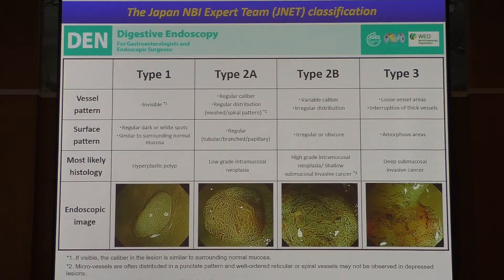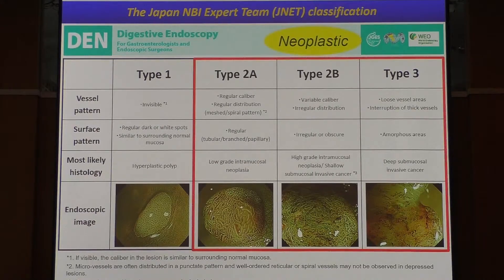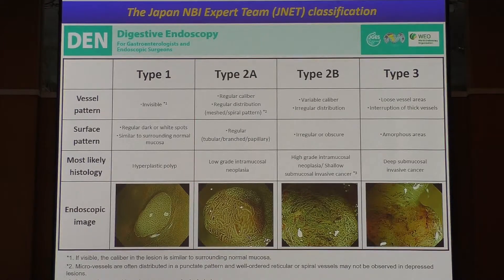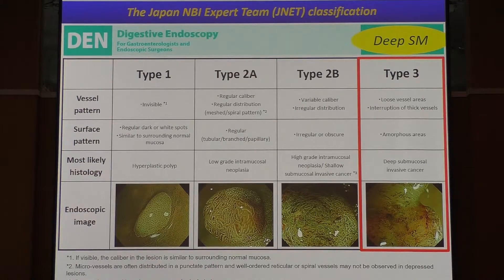With regard to the diagnosis of neoplastic lesions, if you see a lesion showing type 2A, type 2B, or type 3, you can diagnose that lesion as a neoplastic lesion. With regard to depth diagnosis, if you see a type 3 lesion, you can confidently diagnose that lesion as SM-invasive cancer.